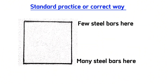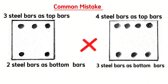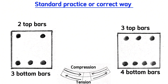The mistake I normally see is making three steel bars as top bars and two steel bars as bottom bars, or four steel bars as top bars and three steel bars as bottom bars — and this is a big mistake. What is correct is fixing three steel bars as bottom bars and two steel bars as top bars.